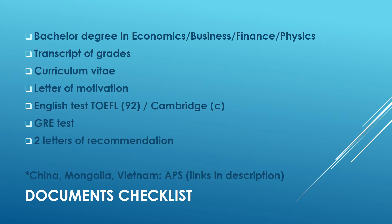So, this is the checklist. You can take a screenshot of this screen and print it so that you know exactly what you will need. First of all, we need a bachelor degree in economics, business, finance, physics, or any related field. You will also need a transcript of your grades, which is how you prove that you have knowledge of mathematics and the required skills.